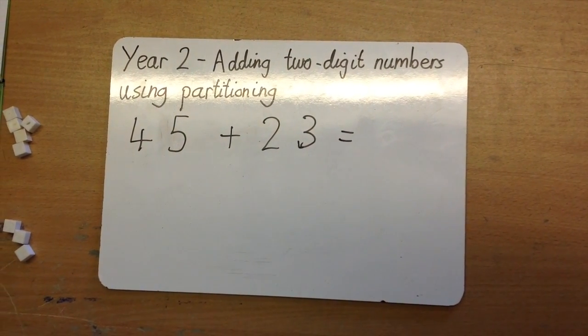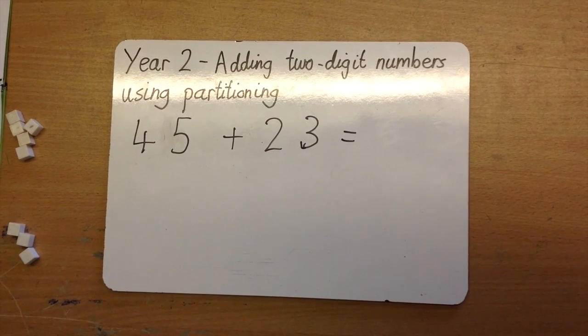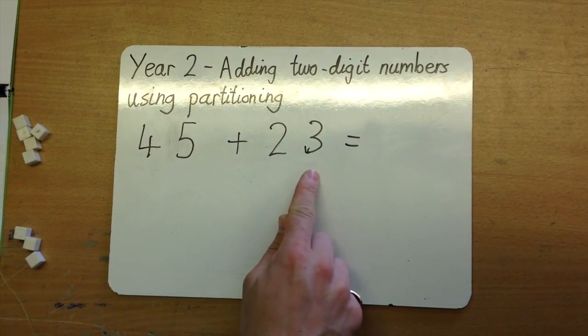Year 2. Adding 2-digit numbers using partitioning. 45 add 23 equals.